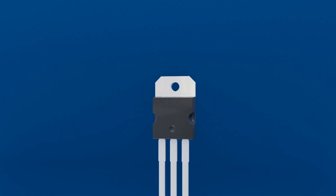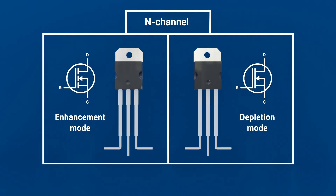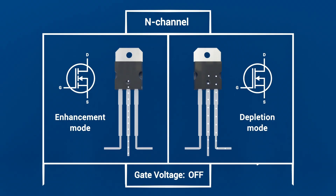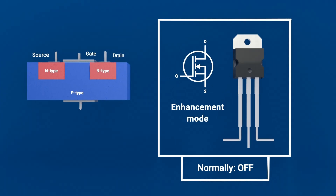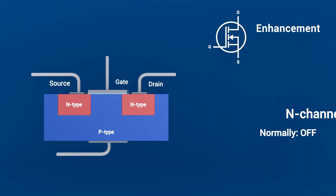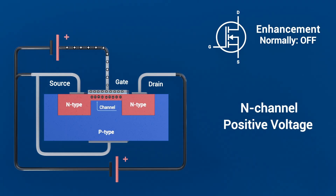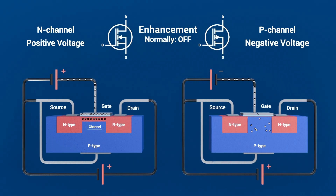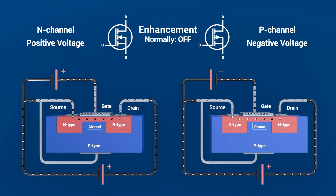There are two types of MOSFETs. Depletion Mode and Enhancement Mode MOSFETs share the same basic structure — a gate electrode insulated by silicon dioxide above a semiconductor channel — but they differ fundamentally in their default state, threshold behavior, and typical applications. An Enhancement Mode MOSFET is normally off: there's no channel and no current flows. Only when you drive the gate beyond its threshold — positive for N-channel, negative for P-channel — does an inversion layer form and allow current to pass.